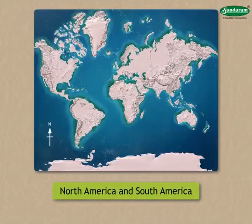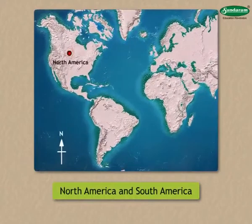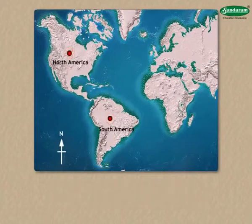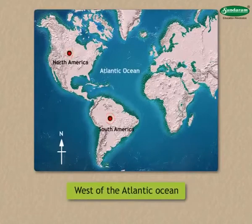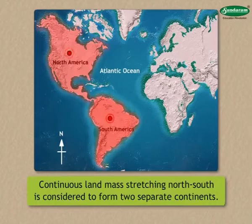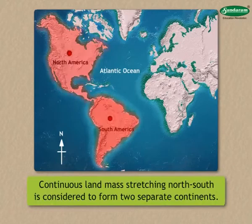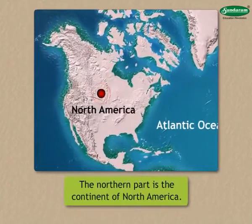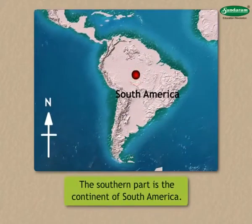Now we shall learn about North America and South America. The land to the west of the Atlantic Ocean is the continent of America. This continuous landmass stretching north-south is considered to form two separate continents — the northern part is the continent of North America and the southern part the continent of South America.